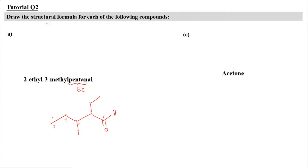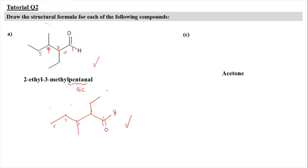The structure is drawn accordingly. The two representations shown are essentially the same — just drawn in a different pattern style, but the connectivity is identical: carbons 3, 4, and 5 continue the chain with the substituents at positions 2 and 3.